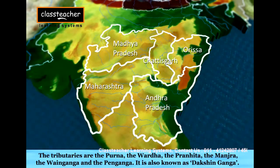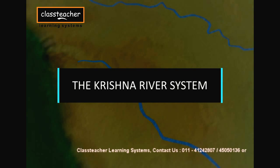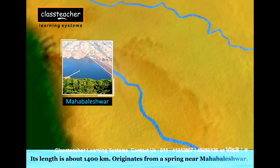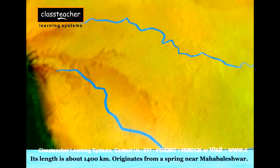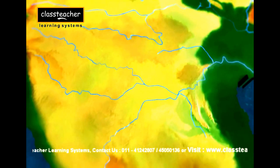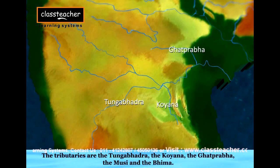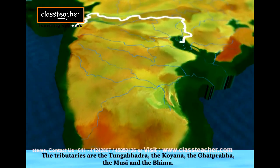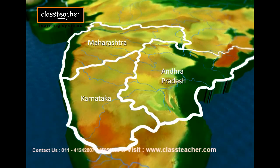It is also known as Dakshan Ganga. The Krishna River rises from a stream near Mahabaleshwar, flows about 1,400 km, and reaches the Bay of Bengal. It is joined by the Tungabhadra, the Koyana, the Ghat Prabha, the Musi, and the Bhima. The Krishna Basin covers parts of Maharashtra, Karnataka, and Andhra Pradesh.